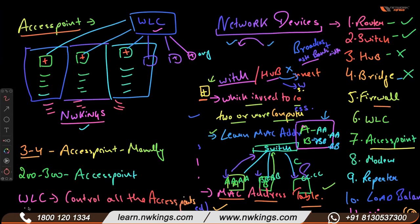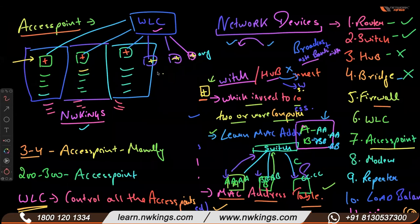So this is a very good device. Most big companies use WLC. Wi-Fi — suppose you want to connect to Wi-Fi. Normally at your home, you have only one Wi-Fi device. But when you go to colleges, universities, and big companies, they have many, many Wi-Fi devices. Everywhere they have small Wi-Fi devices in the ceiling.